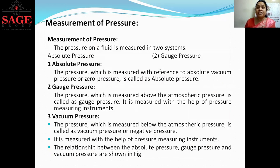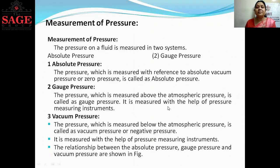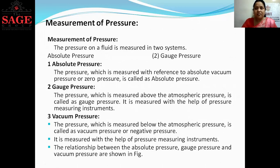Now let's discuss gauge pressure. In absolute pressure, we take the benchmark and datum line as the absolute vacuum pressure. But in the case of gauge pressure, the datum line is atmospheric pressure. In gauge pressure conditions, the value of atmospheric pressure is zero — that is called gauge pressure — and it is measured with measuring instruments.